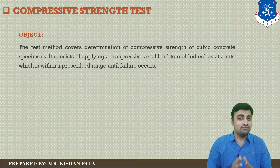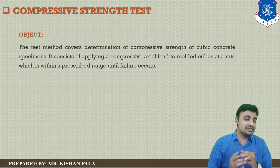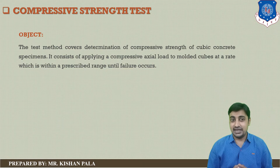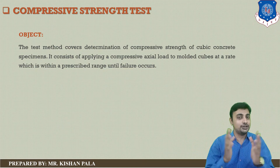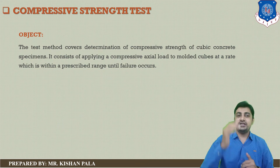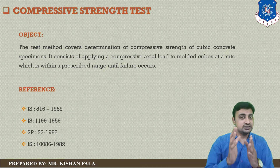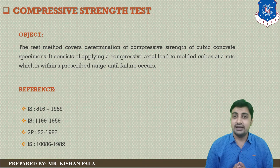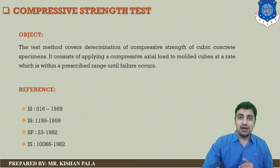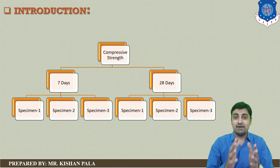The objective of this test is to identify the compressive strength of a cubic concrete mass and to identify the maximum load the concrete mass can resist until failure. The test covers the determination of compressive strength of cubic concrete specimens by applying compressive load on molded cubes at a prescribed rate until failure occurs. You can refer to Indian Standards IS-516-1959, IS-1199-1959, SP-23-1982, and IS-10082-1982.